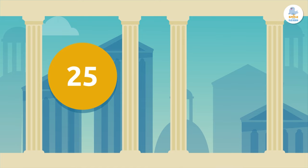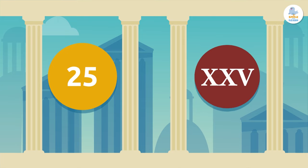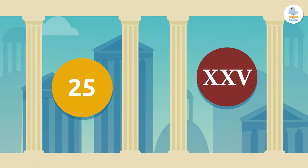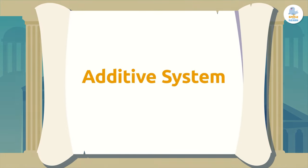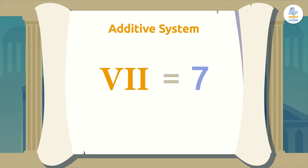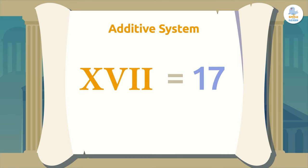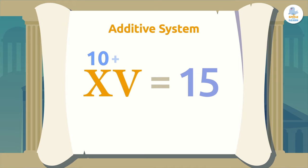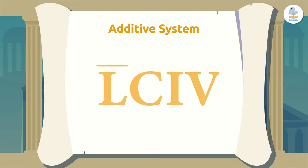Is the numbering system we use today the same as the Roman numbering system? No, of course not! In the ancient Roman Empire, the numbering system was additive. This means that each letter has a value and does not have place value — that is, values are represented by the sum of the symbols in the number.